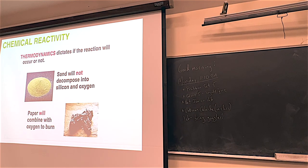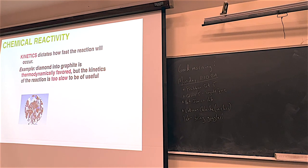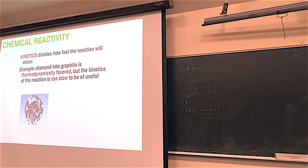Sand going back to silicon and oxygen gets a big thermodynamic thumbs down. Kinetics controls the rate of a chemical reaction. Even if a reaction is thermodynamically favored, if it is not also kinetically favored, it will not occur on an observable timescale. Diamonds are thermodynamically favored to turn into graphite, but the reaction is so slow it never occurs observably.